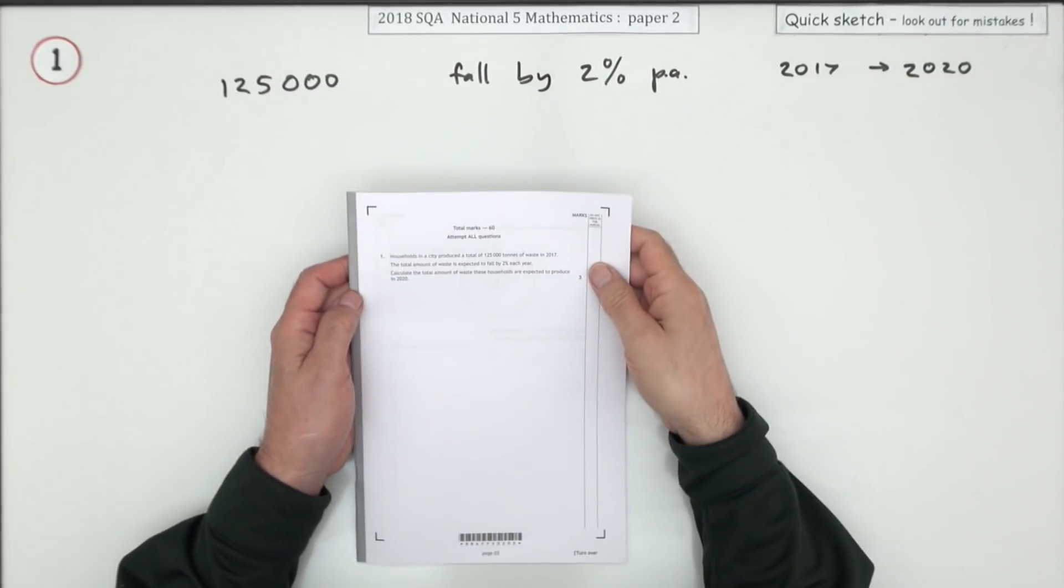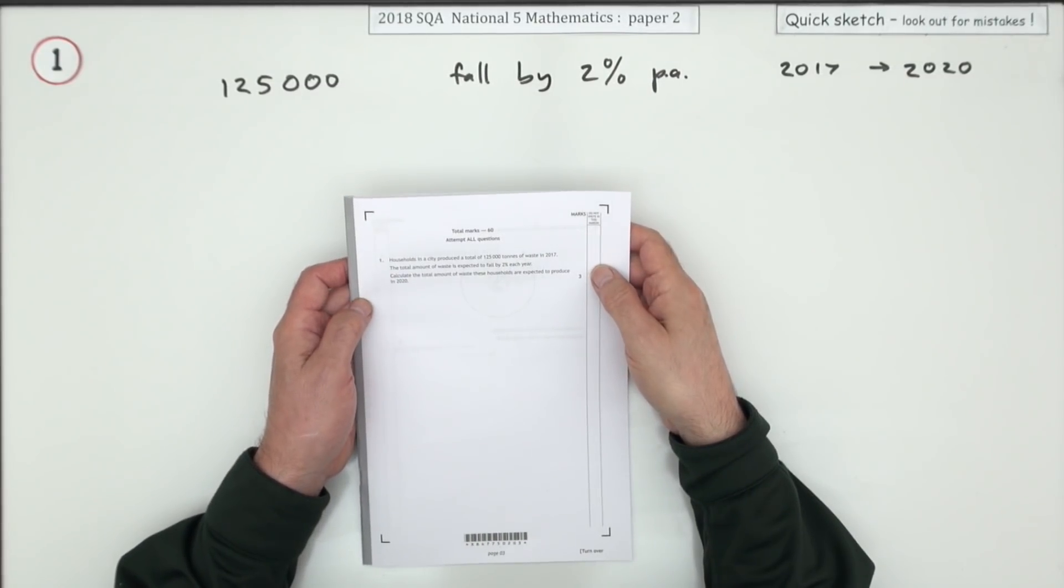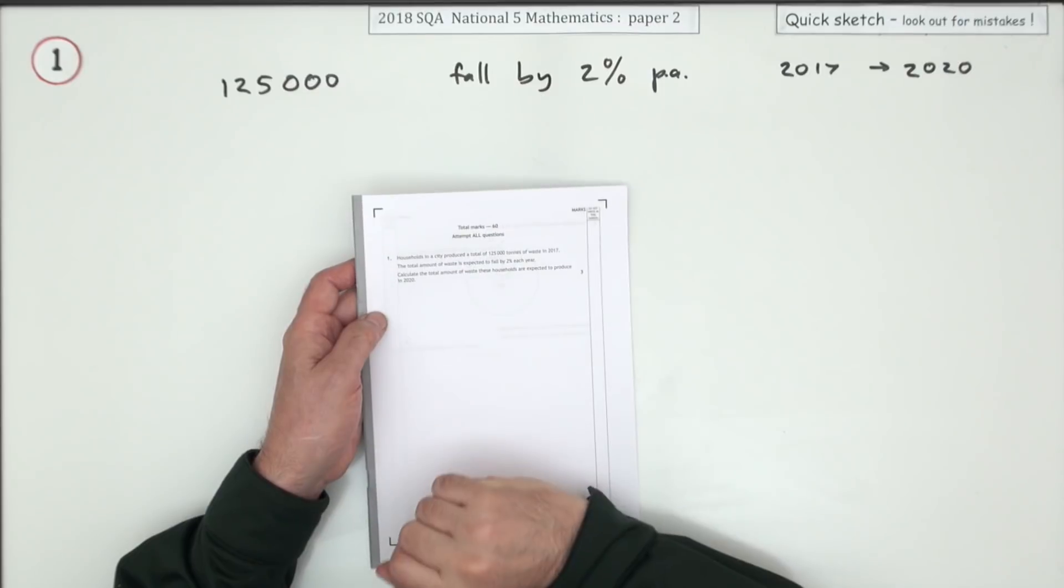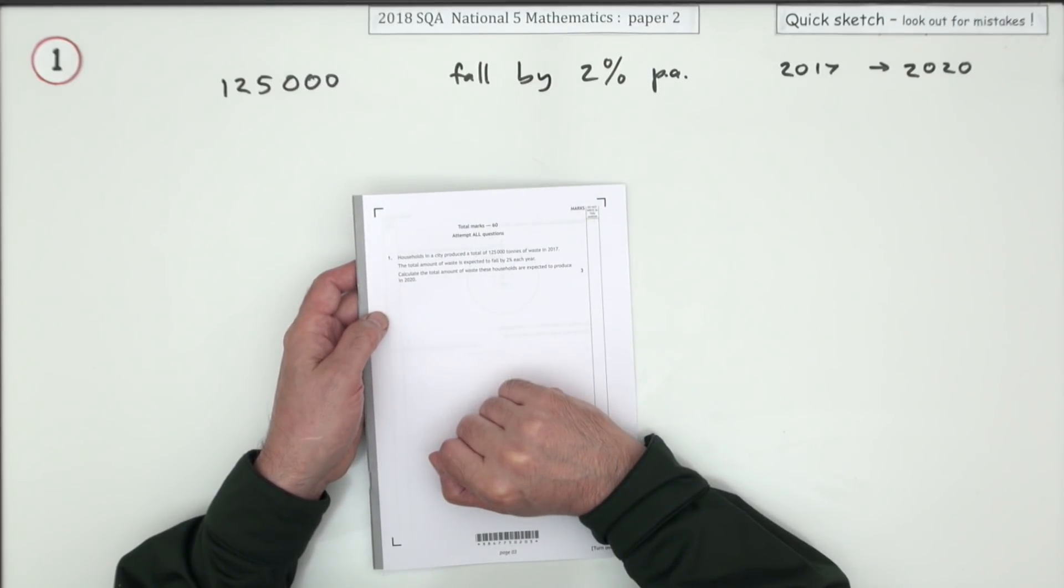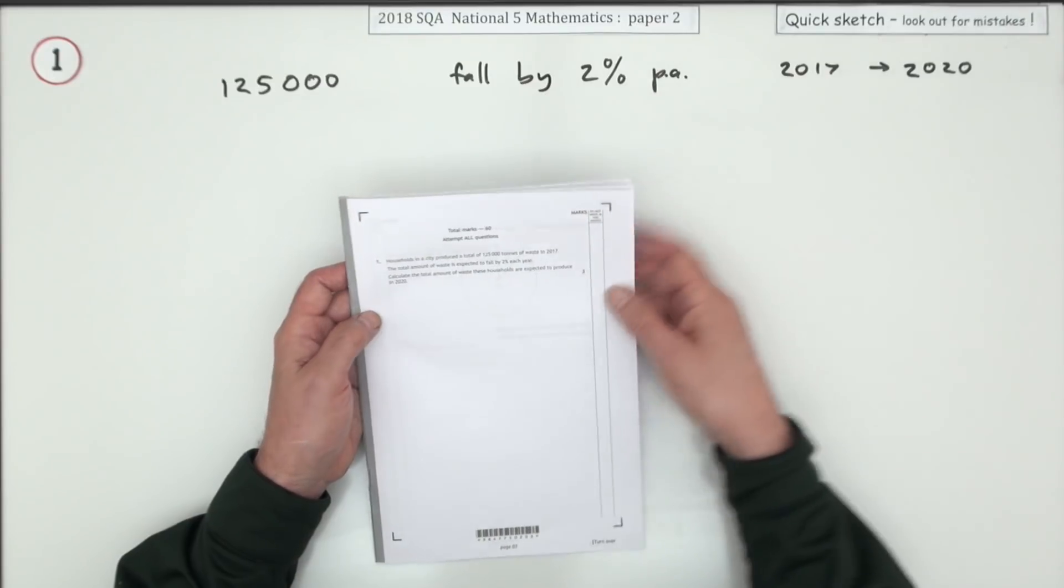So number one then from paper two of the 2018 National 5 Maths, there's that expected question there. The percentage increase or decrease regularly over a number of years.